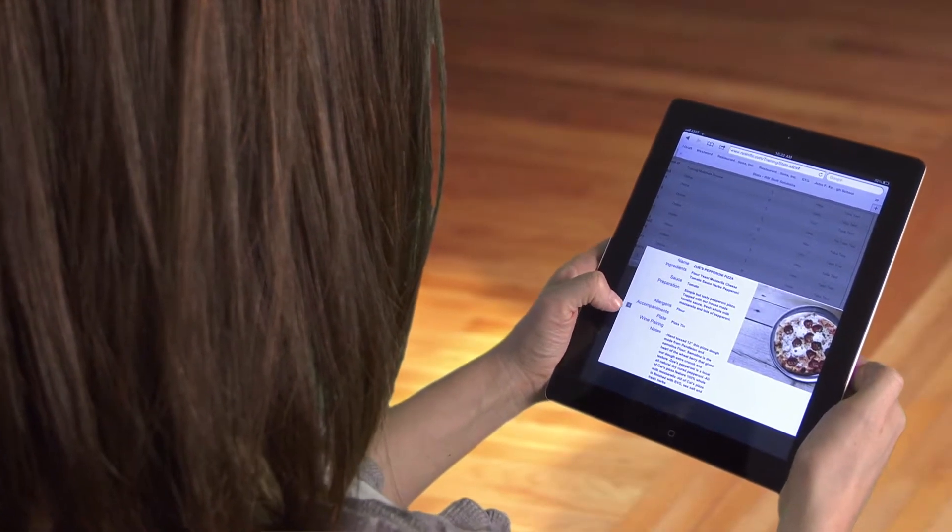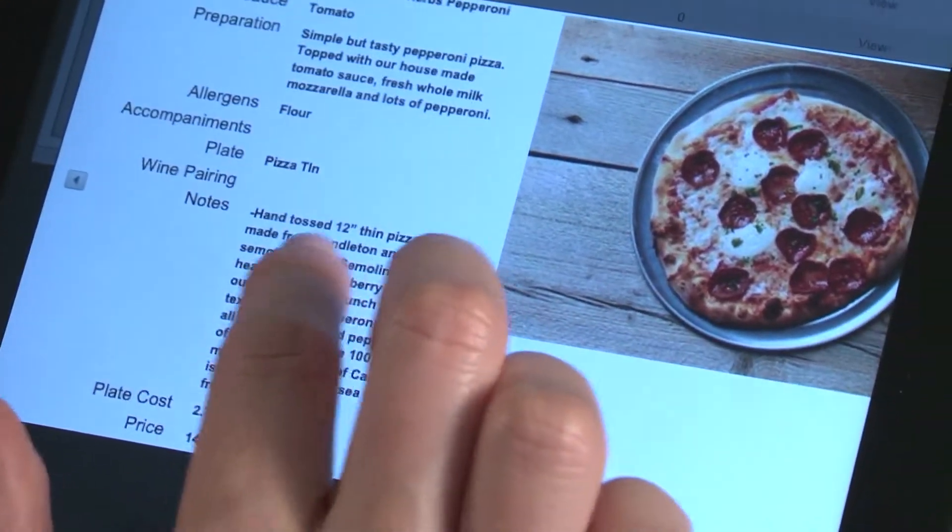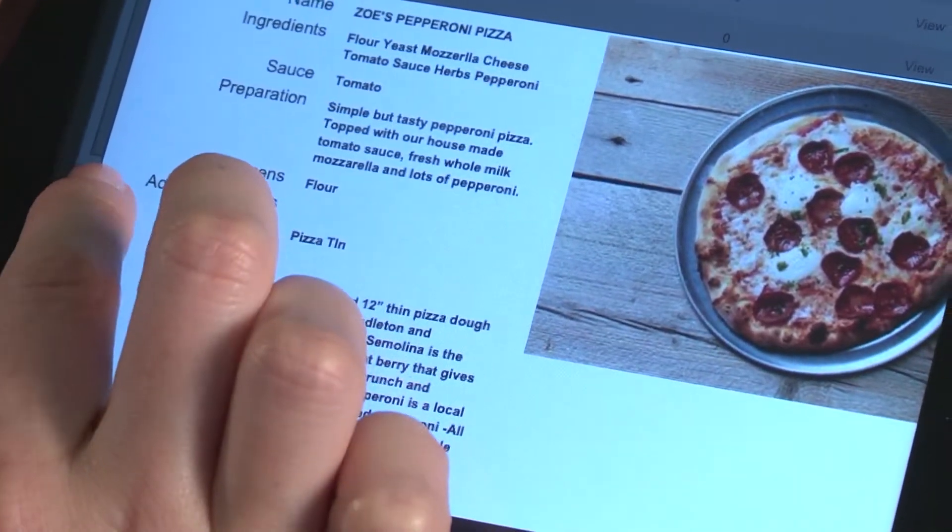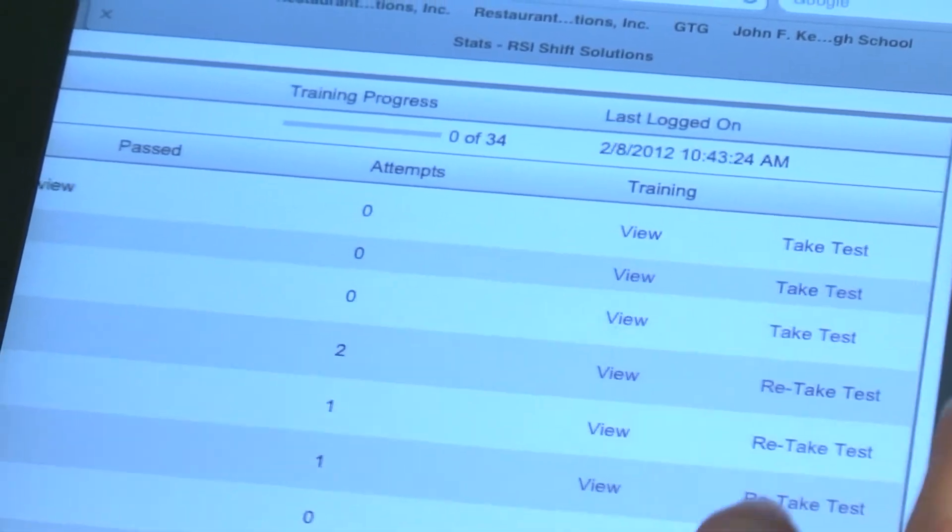One fact was clear. The same fragmentation existed between these critical functions. Shift Solutions not only provides team members with an incredible training and education system, it places a laser focus on human resource management and reducing team member-centered liabilities that can result in bankruptcy.